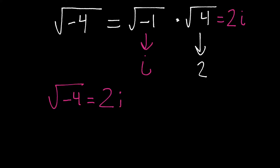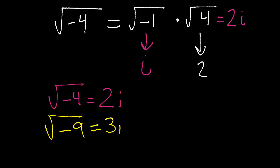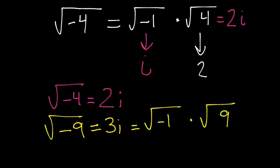For example, the square root of negative 9 would be 3i. Because we would have the square root of negative 1 times the square root of 9. The square root of 9 is 3, and the square root of negative 1 is i.